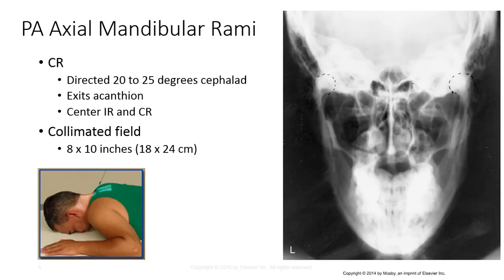The same positioning criteria exists for the PA axial mandibular rami, but the CR should be directed 20-25 degrees cephalad to exit the acanthion. Notice how the articulations of the mandibular condyles are better visualized with the angled axial view.